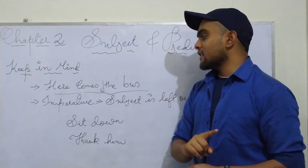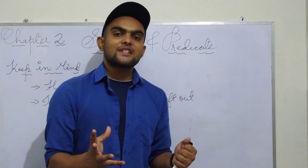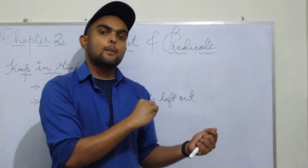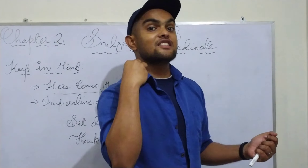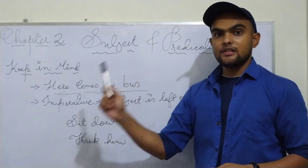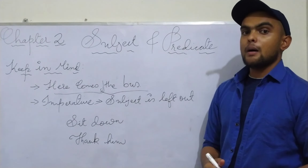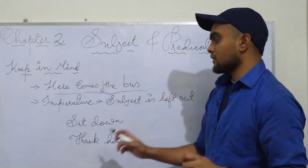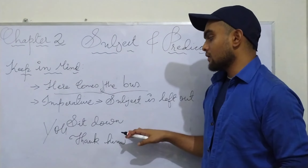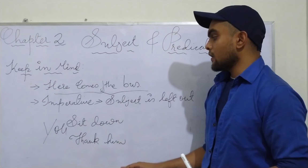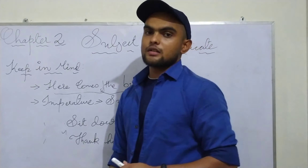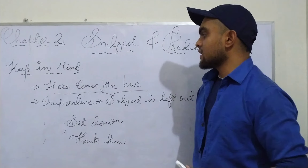Another case — in imperative sentences, the subject is omitted. We can't see the subject — it is invisible. We are just opting it out. For example, imperative: 'Sit down.' Another example: 'Thank him.' But there is a subject — we are just not using it. The subject 'you' applies to both: 'You sit down,' 'You thank him.' Both are command sentences. So in imperative sentences, 'you' is omitted. Keep these things in mind when dealing with subject and predicate.